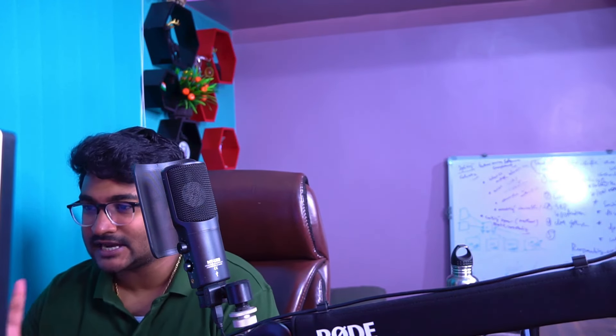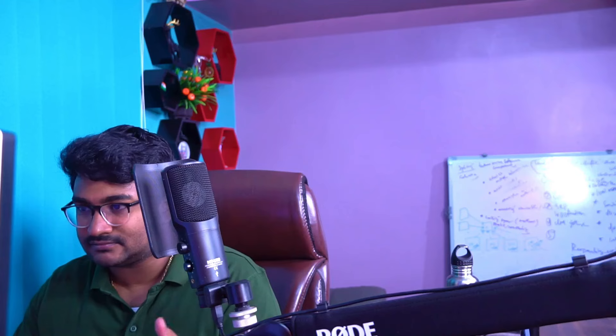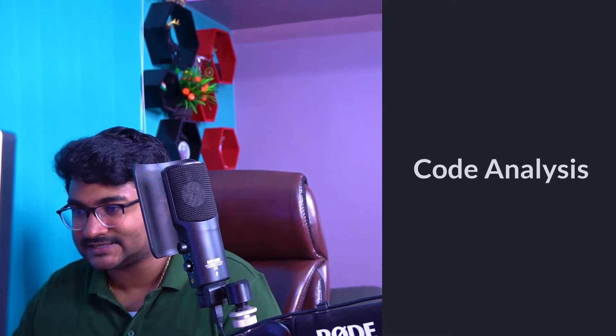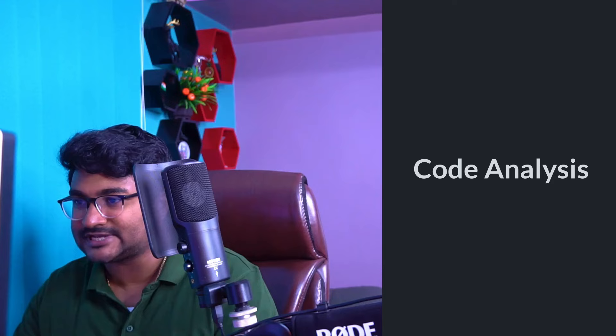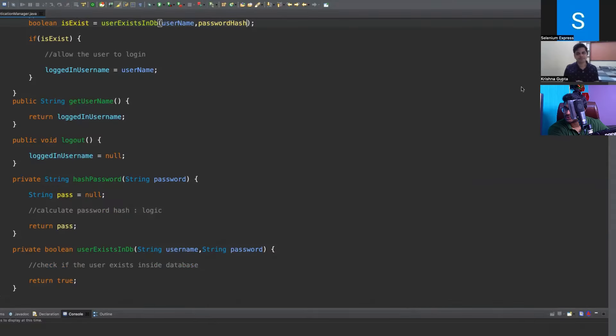I'm going to show you a class. Go through the code — I haven't written any fancy code, just simple things. Tell me if this follows SRP or doesn't follow SRP. If it doesn't follow, explain why, and how you would change or create new classes. I'm sharing my desktop — let's go through the code. There is a class called Authentication Manager.